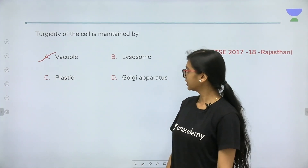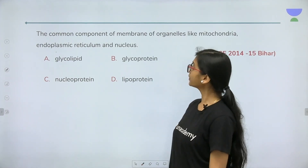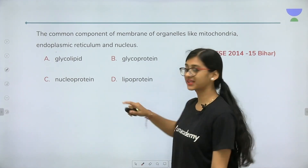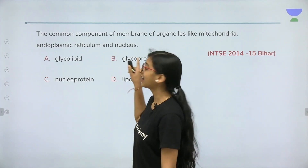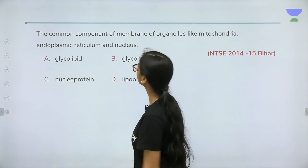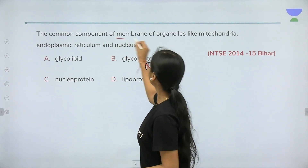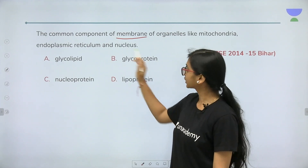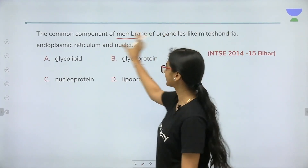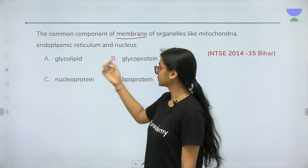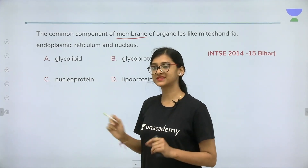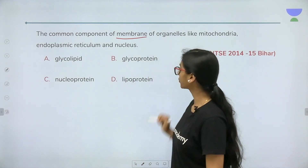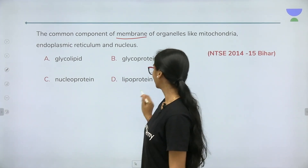The next question: what is the common component of the membrane of organelles like mitochondria, endoplasmic reticulum, and nucleus? The options are glycolipid, glycoprotein, nucleoprotein, and lipoprotein. This question is quite tricky.